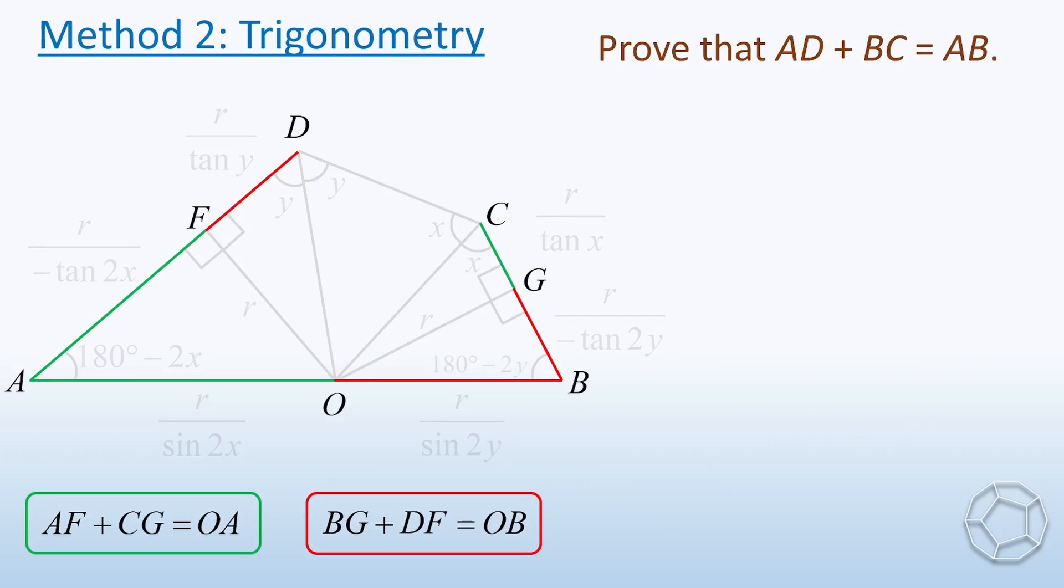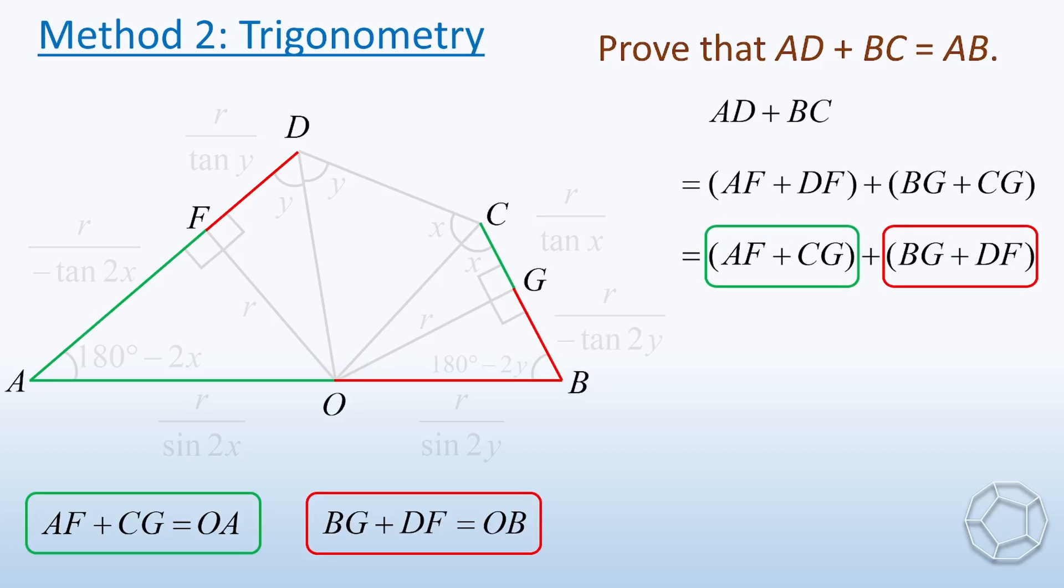Recall the problem again. The sum of AD and BC can be separated into the lengths of four line segments. Rearranging the terms, we can combine the two results together. So it equals OA plus OB, which is, of course, equal to AB.